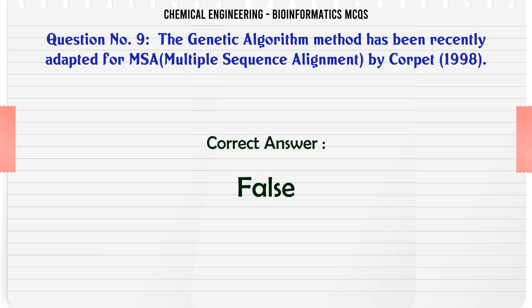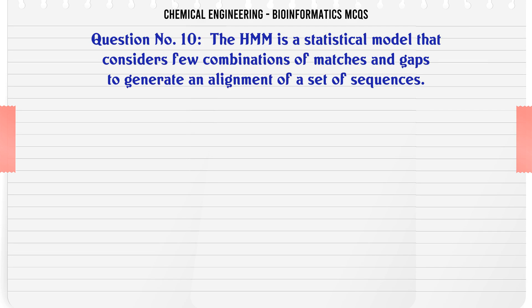The HMM is a statistical model that considers few combinations of matches and gaps to generate an alignment of a set of sequences. A. True. B. False. The correct answer is: False.